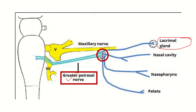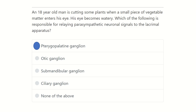The parasympathetic signal travels through the greater petrosal nerve, then the pterygopalatine ganglion, and finally reaches the lacrimal gland. Remember two names for lacrimal gland tear secretion: the pterygopalatine ganglion and the greater petrosal nerve. Our answer is the pterygopalatine ganglion, which conveys the parasympathetic neuronal signal to the lacrimal apparatus. Thank you.